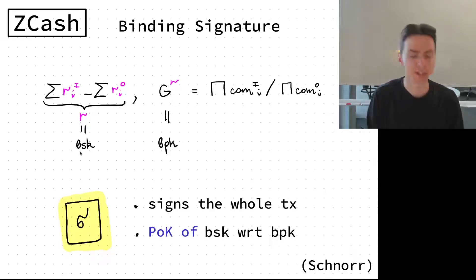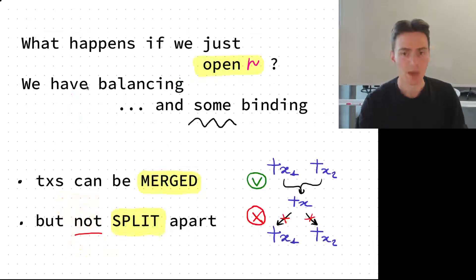What Zcash does is it says we have this joint randomness r and we have g to the r, so this is a kind of binding secret key bsk and the right thing is binding public key bpk. Zcash provides a Schnorr signature essentially, the signature sigma on the whole transaction proving the knowledge of bsk with respect to bpk. Our thinking is what happens if we just open this value r? We get balancing and we achieve some binding. Transactions can be merged but you can't split them apart.